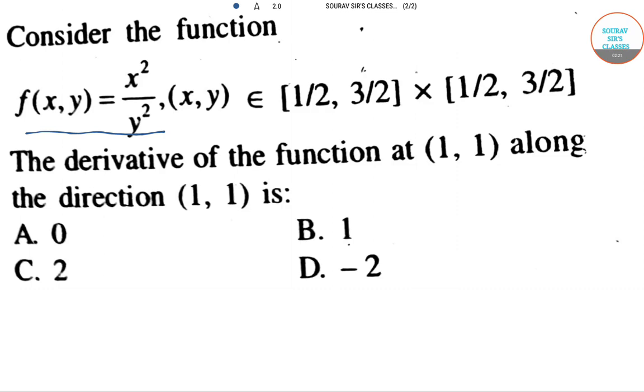The directional derivative formula is: directional derivative = a₁·fₓ + a₂·fᵧ, where fₓ and fᵧ are partial derivatives of f(x,y) = x²/y².